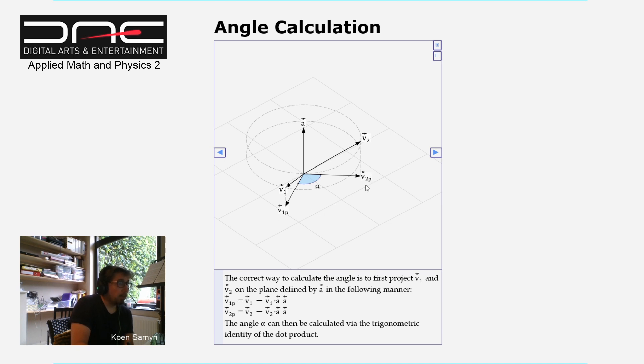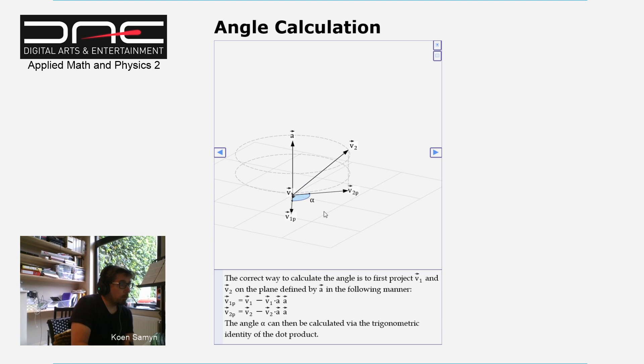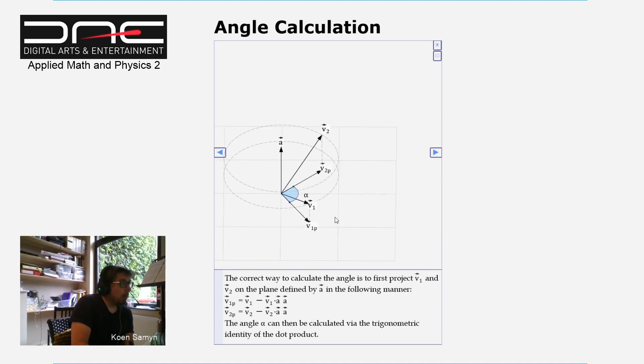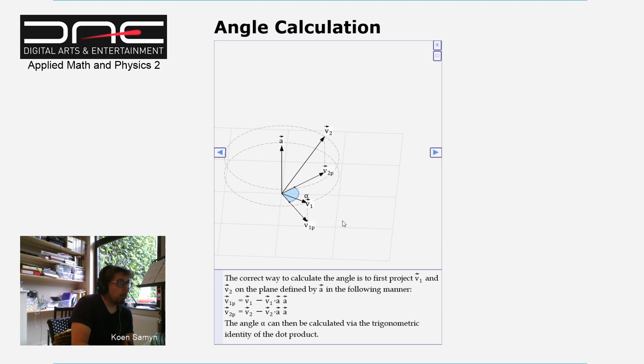So this concludes this video. Very important to realize that this is a potential problem, and that to be safe, it's best if you calculate an angle of rotation around one axis. So one degree of freedom, you need to project your vectors to calculate the actual angle.